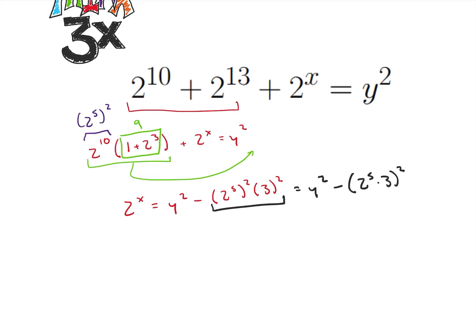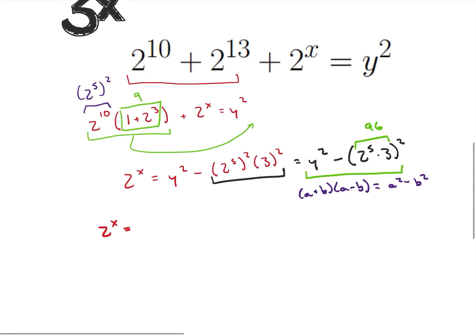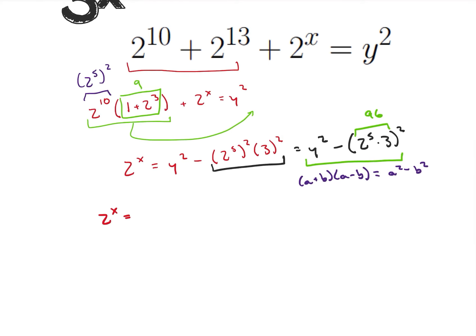So what does this mean? I have y squared minus (2 to the 5th times 3) squared. Now 2 to the 5th times 3 is 32 times 3, which is 96. Using the difference of two squares — remember that (a+b)(a−b) = a²−b² — I rewrite this as 2 to the x equals (y minus 96) times (y plus 96).